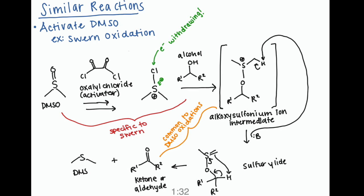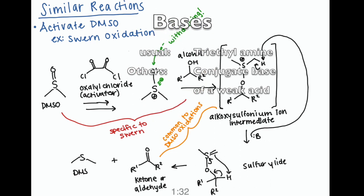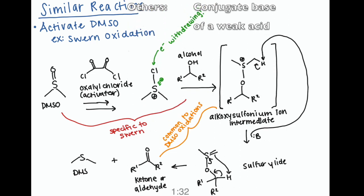And the remaining steps are, as we've seen before, we use a base, usually triethylamine, but in other reactions with a sufficiently activated DMSO, we can use the conjugate base of a weak acid. So we use that base to create the sulfur ylide, which will then give us our ketone or aldehyde and DMS. And these last few steps are common to all DMSO oxidations.